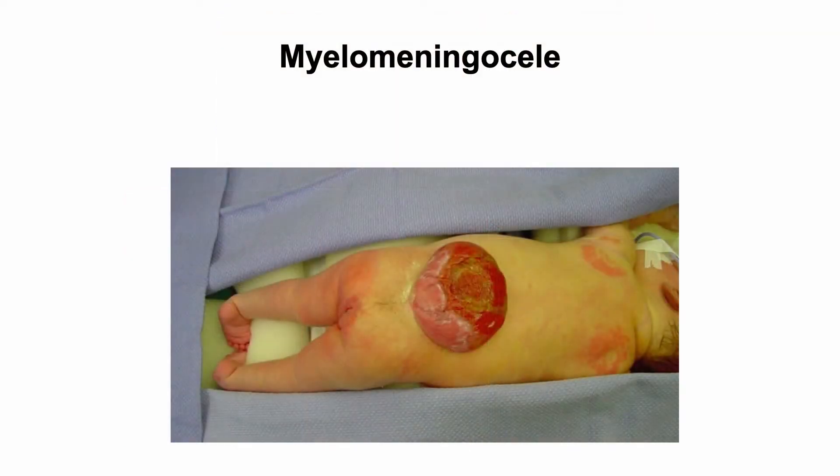This is a typical myelomeningocele. One sees a newborn with a sac that is visible in the lower back. The placode in the center appears as a reddish tissue surrounded by varying degrees of epithelialized arachnoid and other attenuated tissue. The legs are affected — there is a presence of clubbed feet, and there is marked wasting of the muscles of the lower extremities, in particular below the knees.